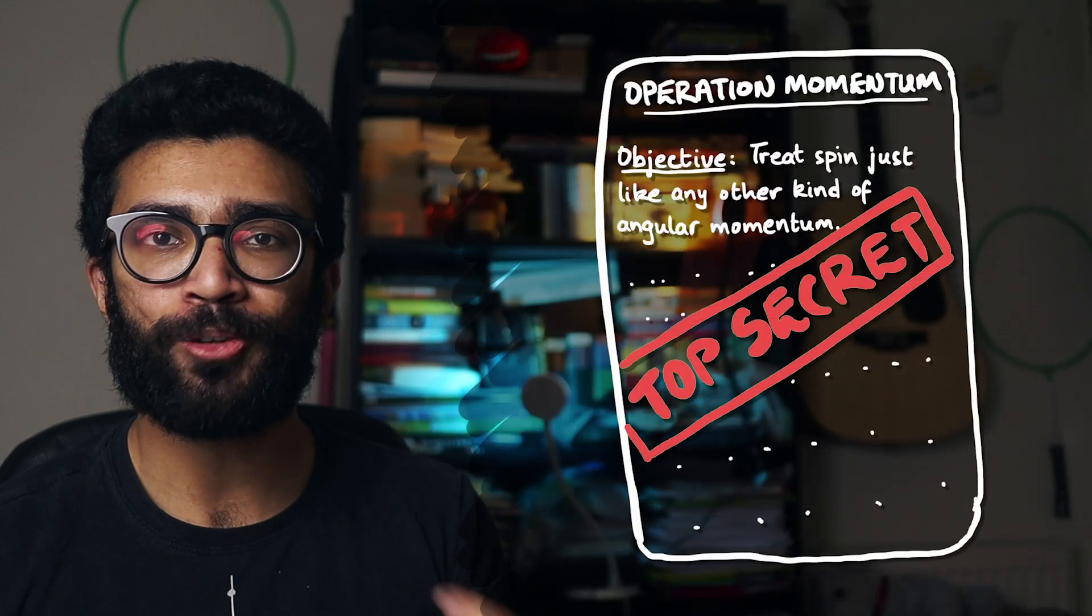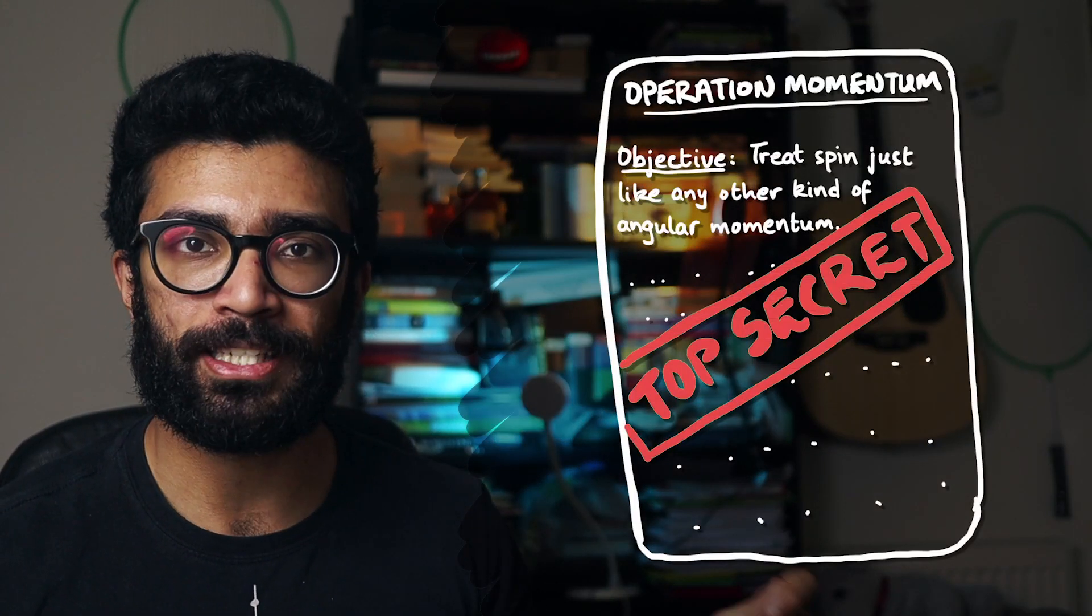So here's the thing. Any angular momentum that an electron gains by, for example, orbiting some object is extra angular momentum on top of the spin angular momentum that it already had. Now, what scientists realized is that if particles such as electrons have spin, which is an inherent angular momentum, then we could treat spin just like we normally treat angular momentum.